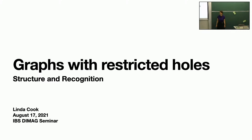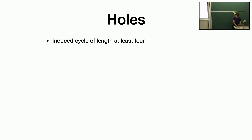Yeah, there's a longer title even than this one, but I didn't want to put it on the slide. Thanks for coming, I'm happy to be here. I'll talk about two results related to graph classes where we restrict what kind of length the induced cycles of the graph are allowed to have. The most important definition is a hole, which is an induced cycle of length at least 4.